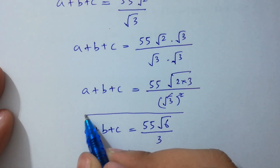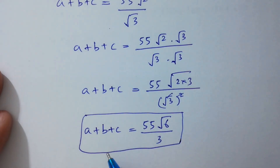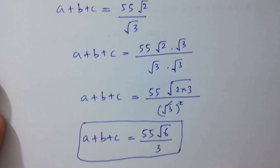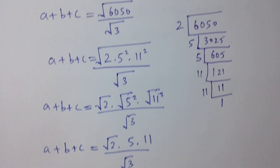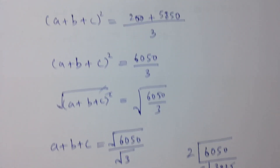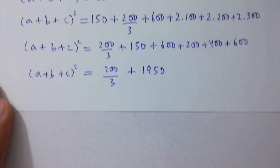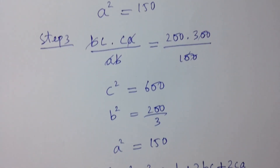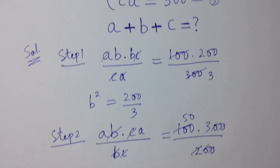That is our final answer: a plus b plus c equals 55 square root of 6 over 3. Thanks for watching this video. Please subscribe to this channel to get notifications of my new videos, and don't forget to share these videos with your classmates and friends so they can also benefit. Bye.